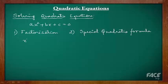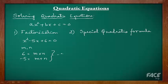Let's take an example: x² - 5x + 6 = 0. To factorize this equation, we will first have to find two numbers, say m and n, where the product equals c, which is 6, and the sum equals the coefficient of x. These numbers can be minus 3 and minus 2. Now let's write this equation in terms of these two numbers.